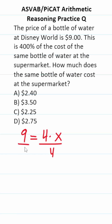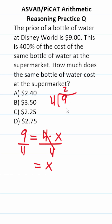Just divide both sides by 4 now to get X by itself. This gives us X equals 9 divided by 4. 4 goes into 9 two times without going over, given that 4 times 2 is 8. 9 minus 8 is 1. We have to add a decimal and a zero placeholder so we can keep doing this long division.